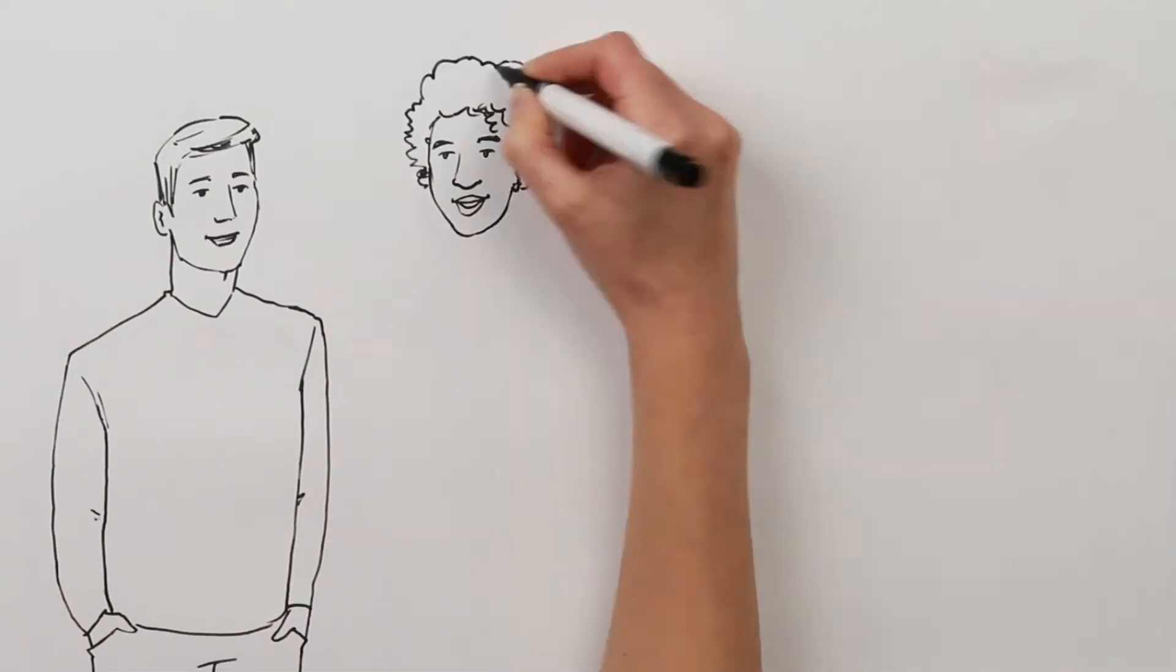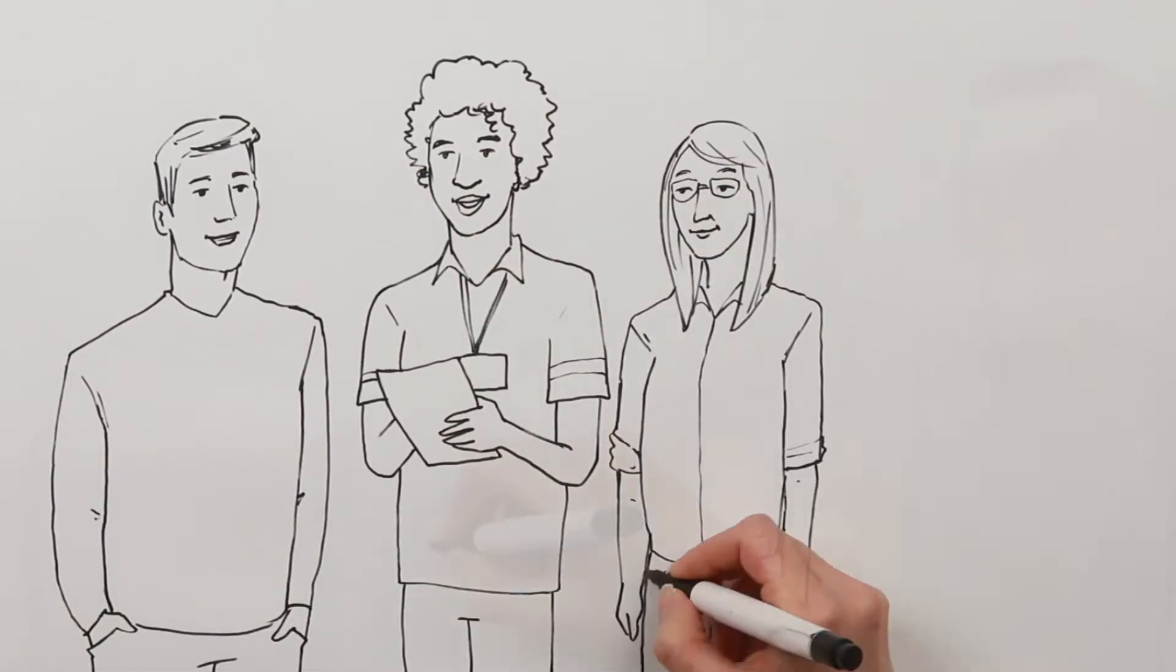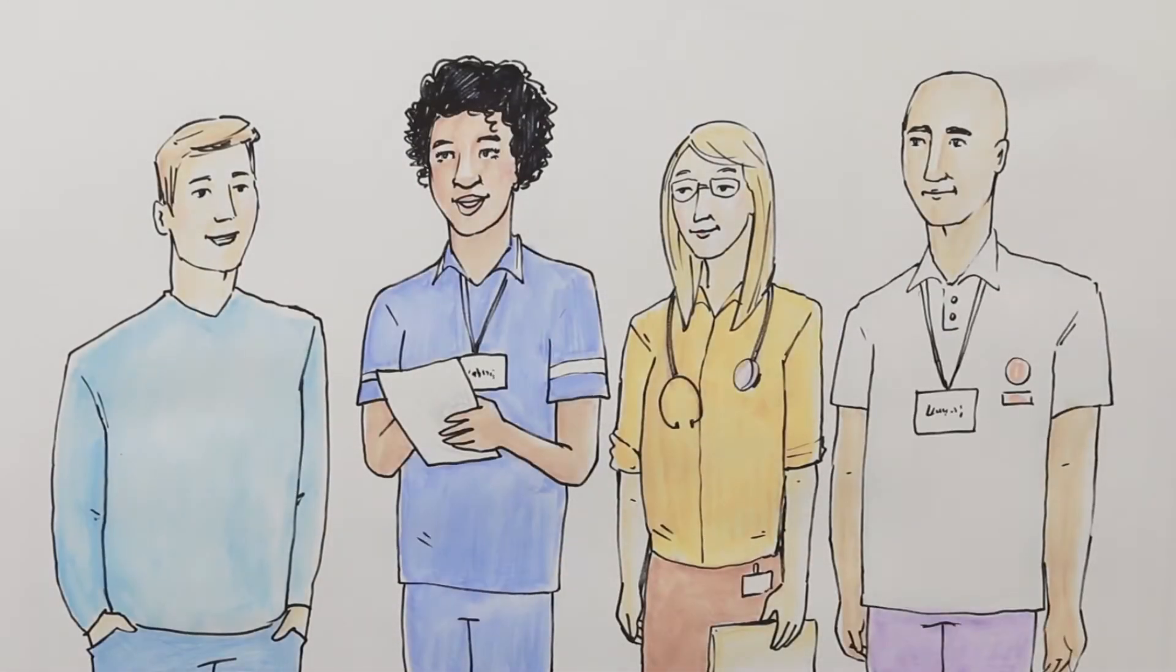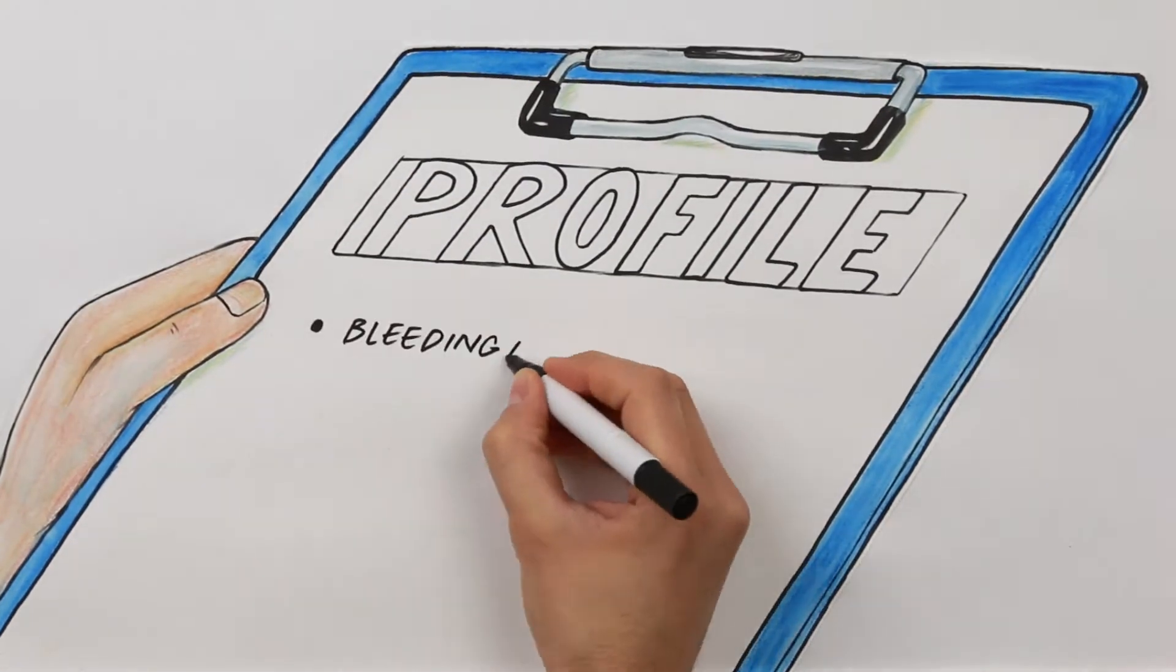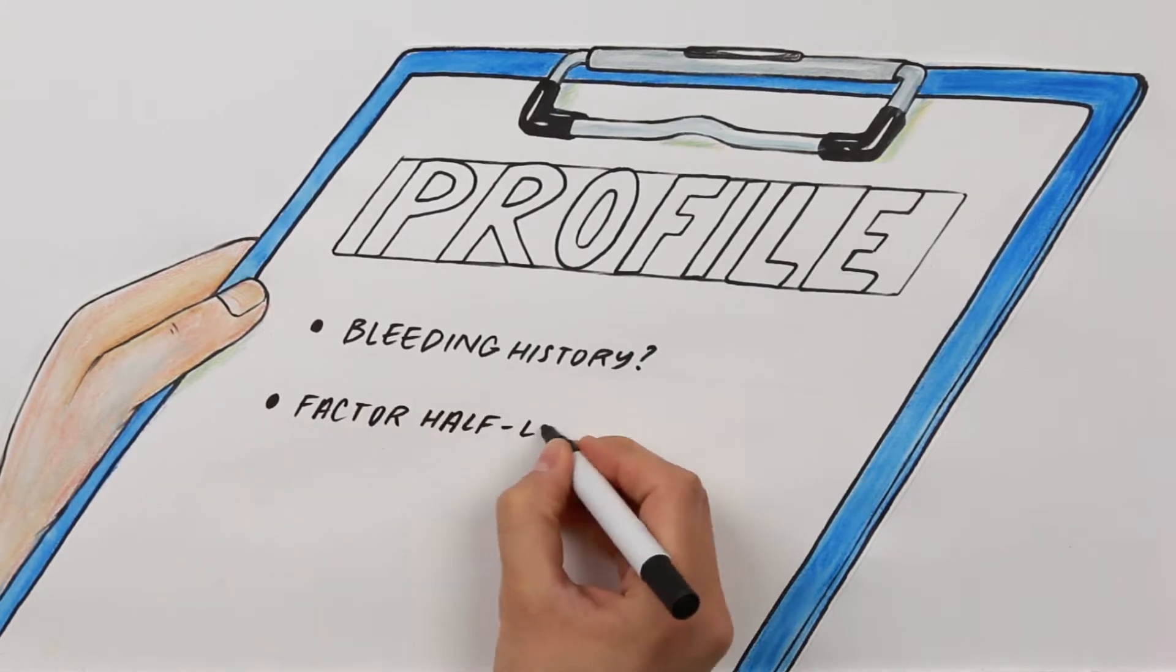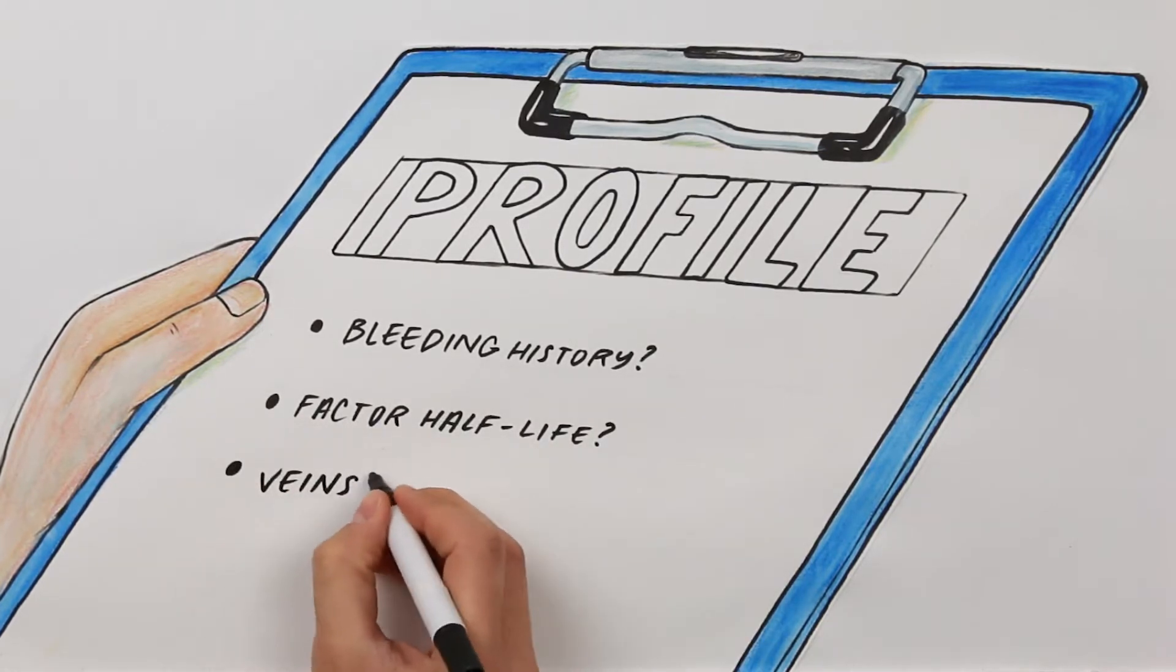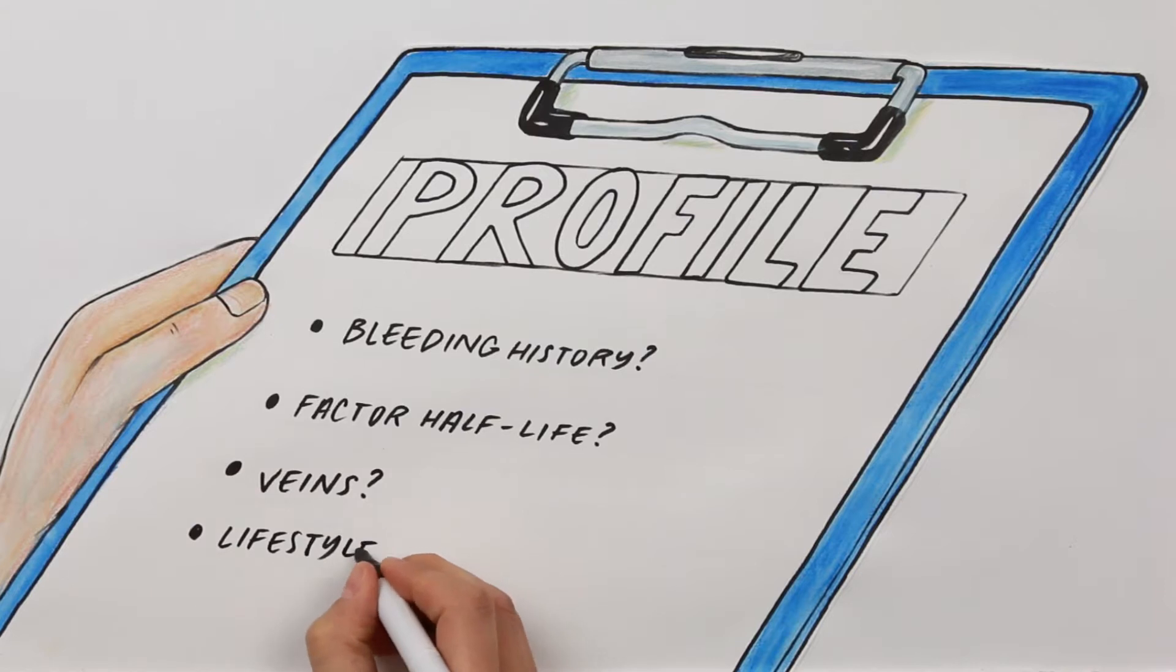If you are on prophylaxis, your clinical team will have selected the dose and timing of your factor treatment that works best for you. They may have looked at your bleeding history, how long factor lasts in you as an individual, how good your veins are, and your current lifestyle and what times in the week you are most physically active.